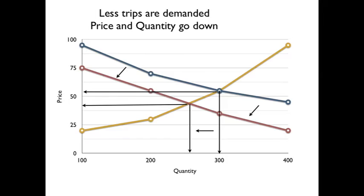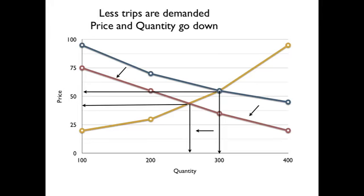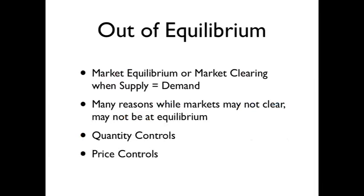Less people are willing, so quantity is going down — somewhere around 250 to 275 — and the price people would pay is now down from $55 to somewhere in the 40s, around $40. We'll get back to solving it algebraically, but one thing we need to look at is when we're out of equilibrium, and what are the things that move us back to equilibrium.